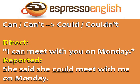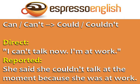Statements with can and can't become could and couldn't in reported speech. Direct: 'I can meet with you on Monday.' Reported: 'She said she could meet with me on Monday.' Direct: 'I can't talk now. I'm at work.' Reported: 'She said she couldn't talk at the moment because she was at work.'